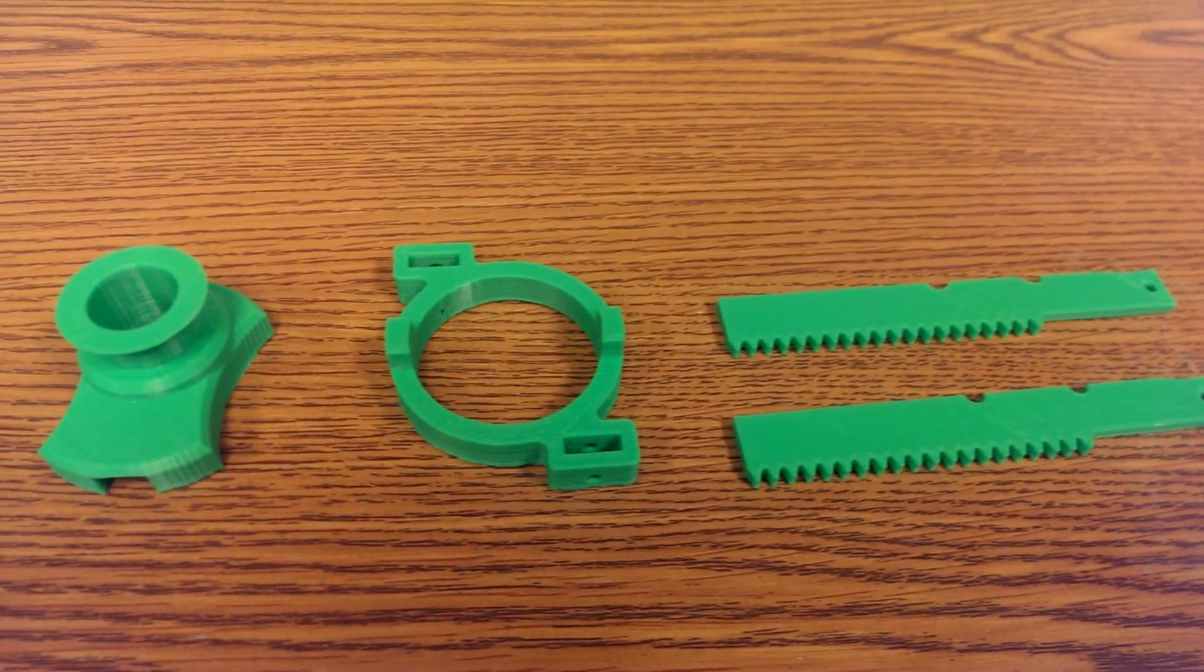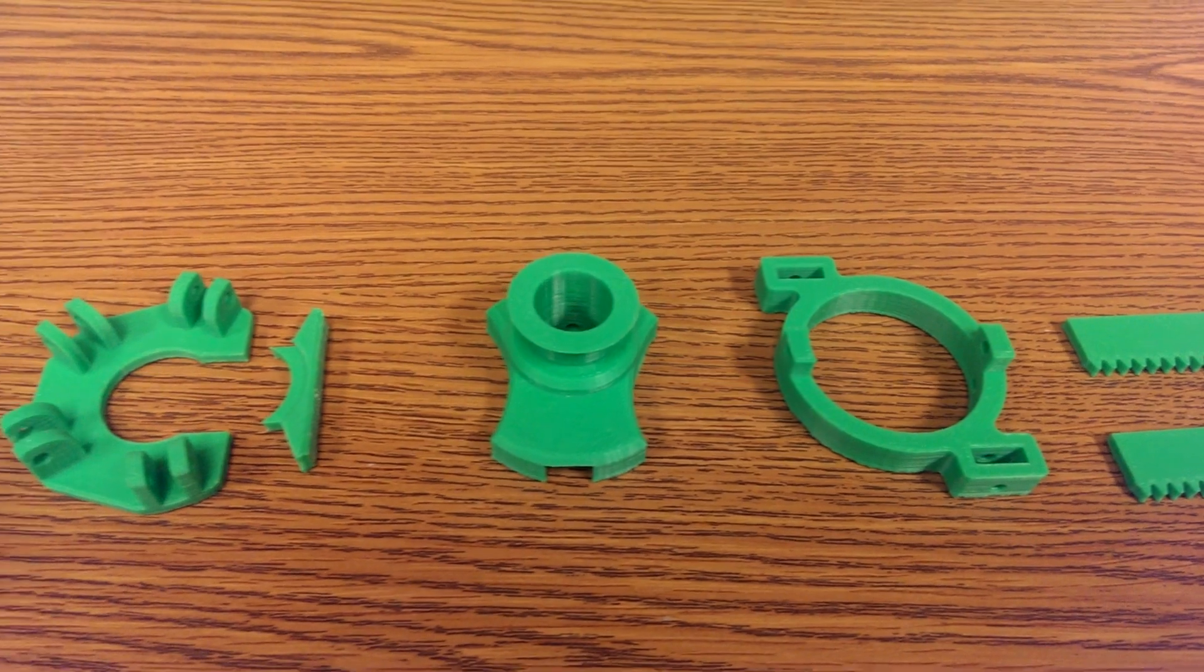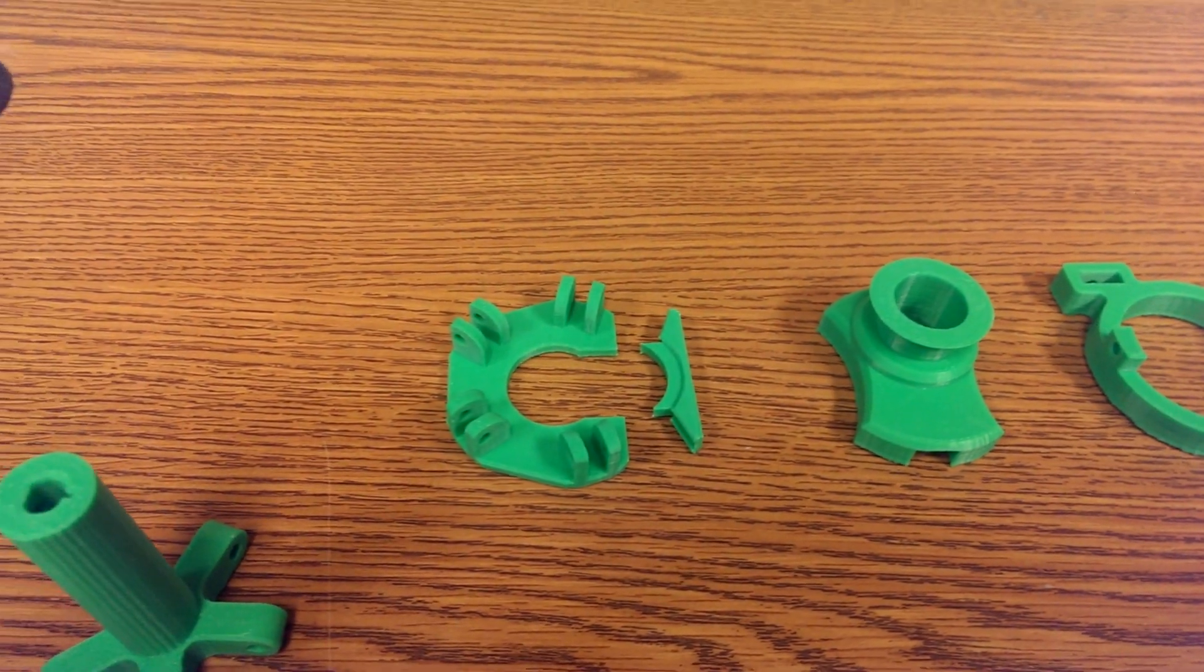Each wheel takes two racks and then four actuation components which I'm calling A, B, C, and D.